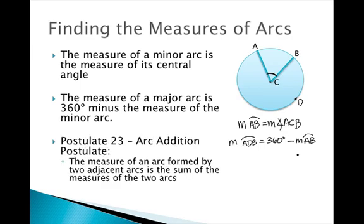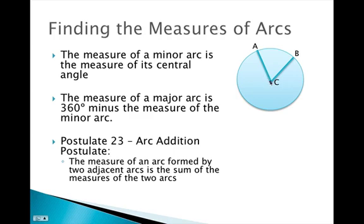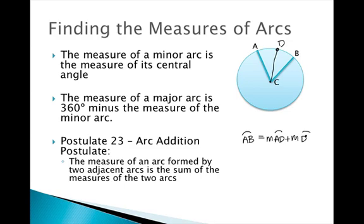Postulate 23 is the Arc Addition Postulate. This postulate states that the measure of an arc formed by two adjacent arcs is the sum of the measures of the two arcs. For example, if we add point D on the circle, the measure of arc AB equals the measure of arc AD plus the measure of arc DB. Adjacent arcs share a common endpoint, and the arc they form is just the sum of those two arcs.